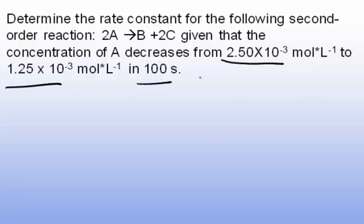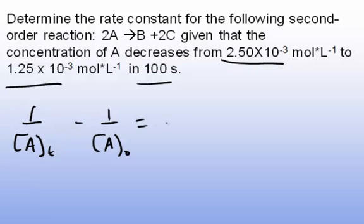We know two concentrations, we know the time elapsed, and from that information and our equation we can calculate the value for k. We'll use the form: 1/[A]_t - 1/[A]₀ = kt. I'll plug in the information that I have...